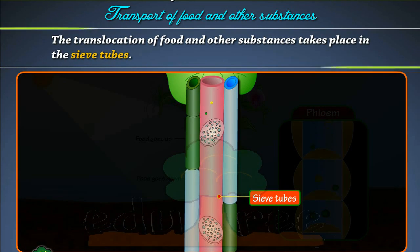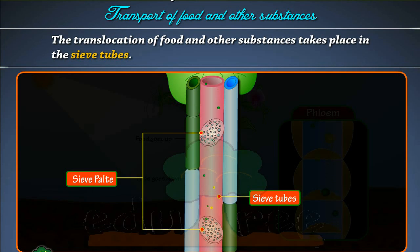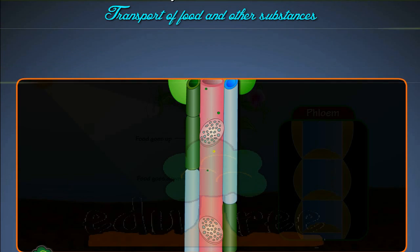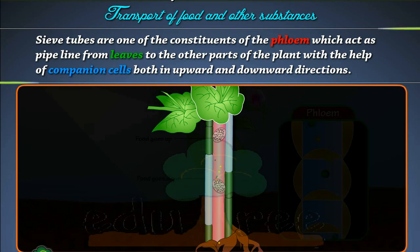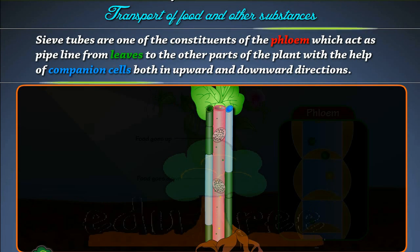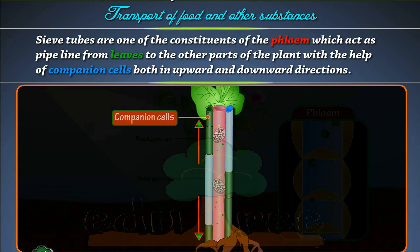The translocation of food and other substances takes place in the sieve tubes. Sieve tubes are one of the constituents of the phloem which act as a pipeline from leaves to other parts of the plant with the help of companion cells, both in upward and downward directions.